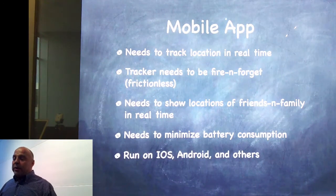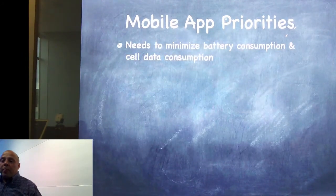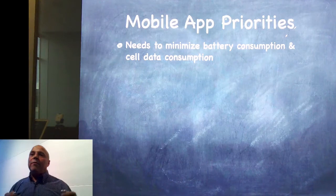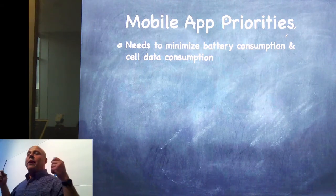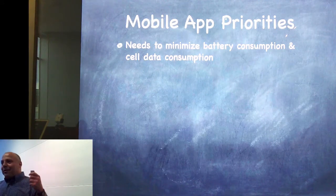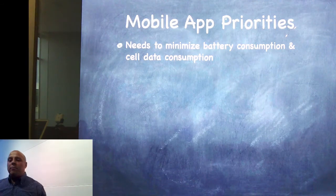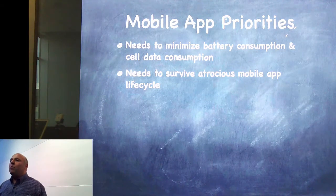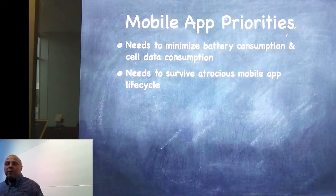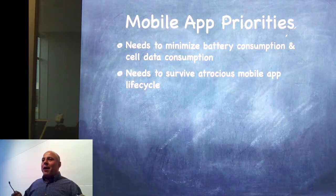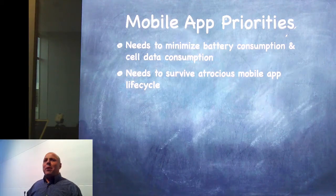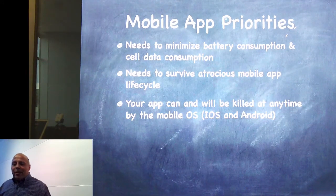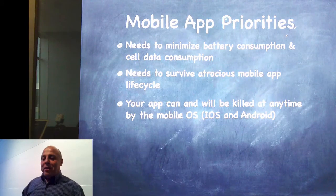It needs to run on iOS, Android, and others. The priorities: minimize battery consumption and also cellular data consumption — you have to think through how to economize on the packet of information you're sending to the server. You need to survive the atrocious mobile app lifecycle. A lot of us are web developers and we've never had to worry about battery consumption, your app going to the background, on pause, on resume. On a mobile app, your app can and will be killed at any time by the mobile OS.